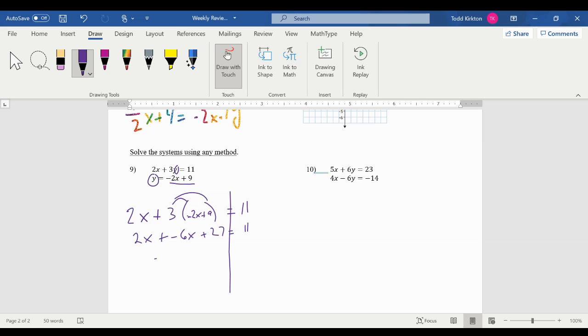Now I'm into solving. So combine your like terms. Subtract 27. So negative 4x equals negative 16, x equals 4.